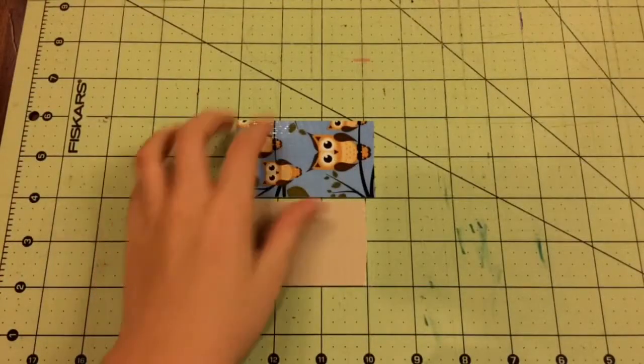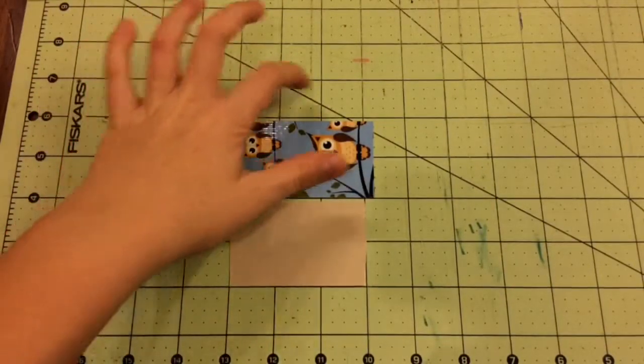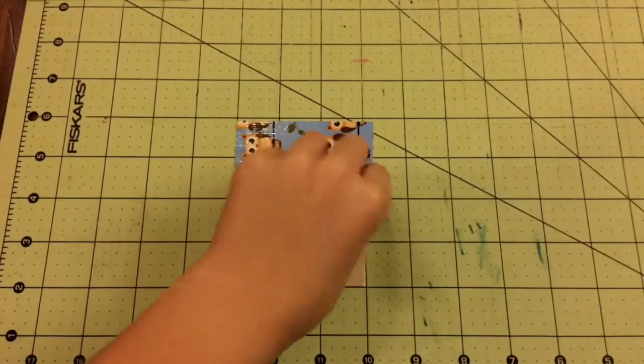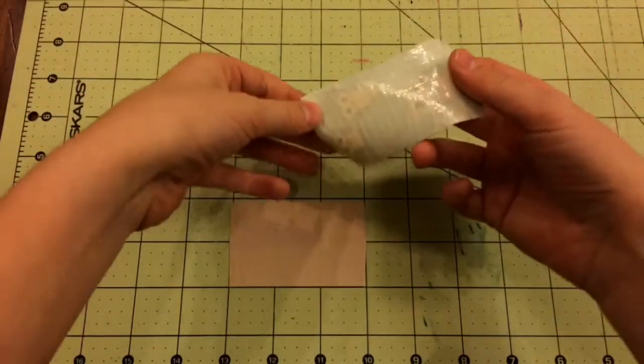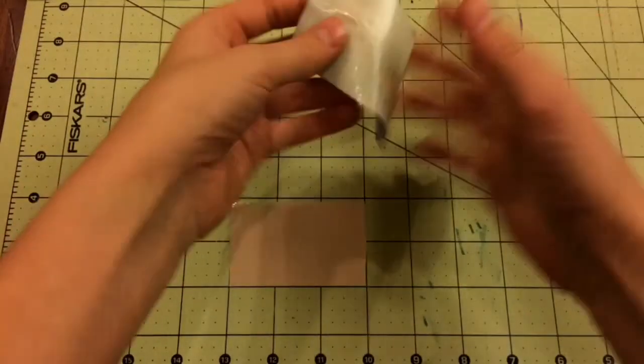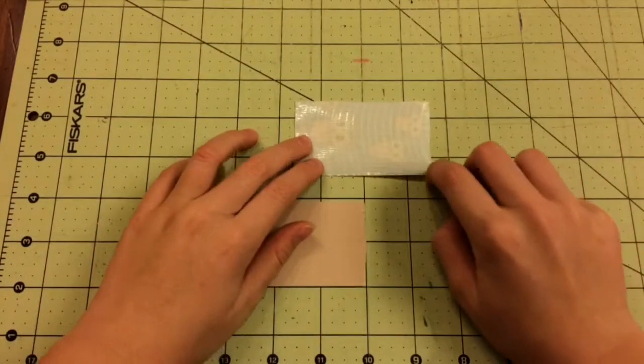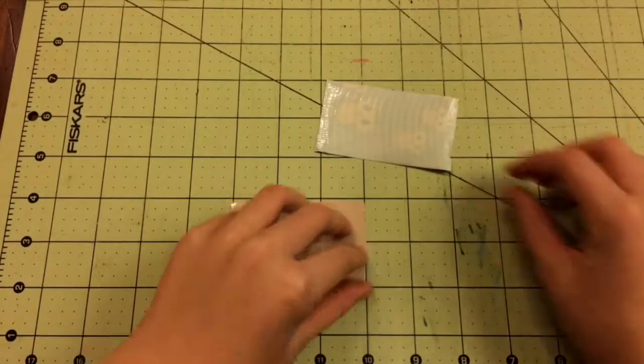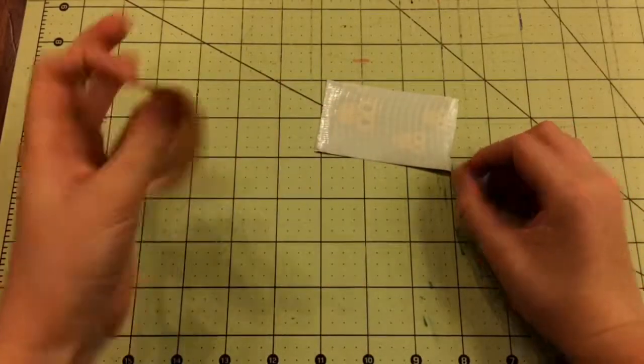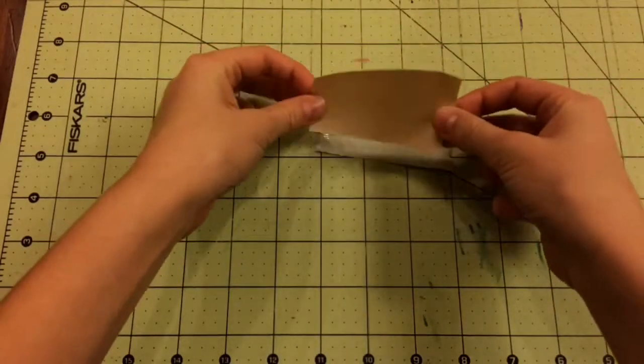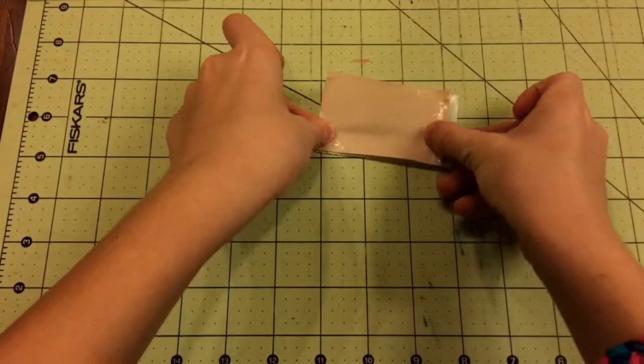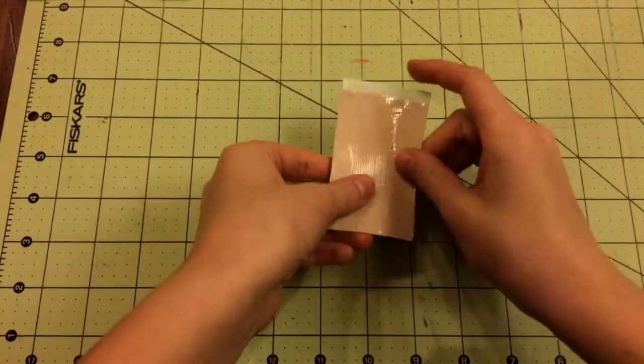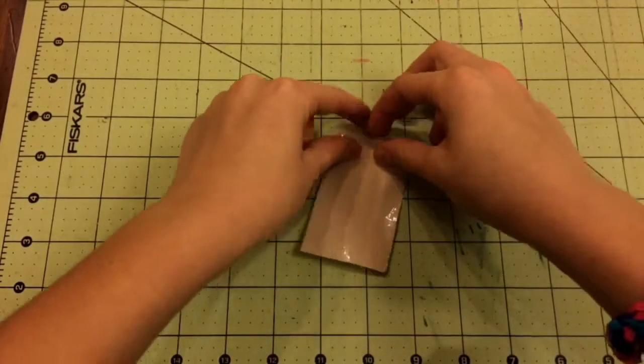Take a piece of your print color that is three and one-fourth inches long and your regular color that is three inches long and put them back to back to where there is one-fourth inch sticky on the top. Now you want to fold that piece of sticky over and make three more of these so that you have four.